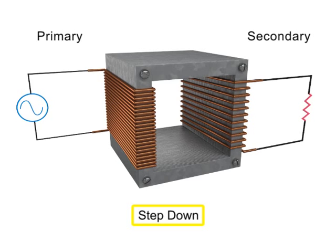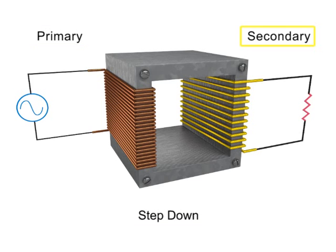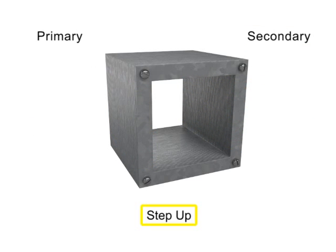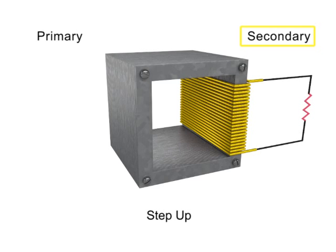In a step down transformer, the number of turns in the primary coil is greater than the number of turns in the secondary coil. In a step up transformer, the number of turns in the secondary coil is greater than the number of turns in the primary coil.